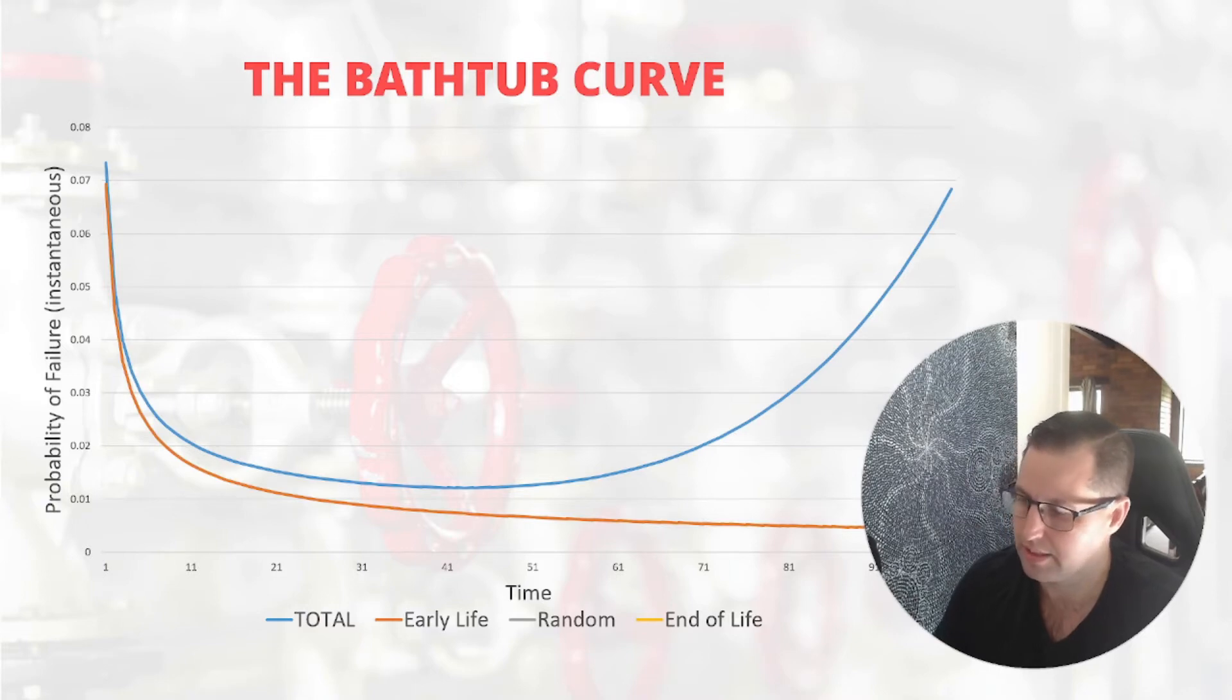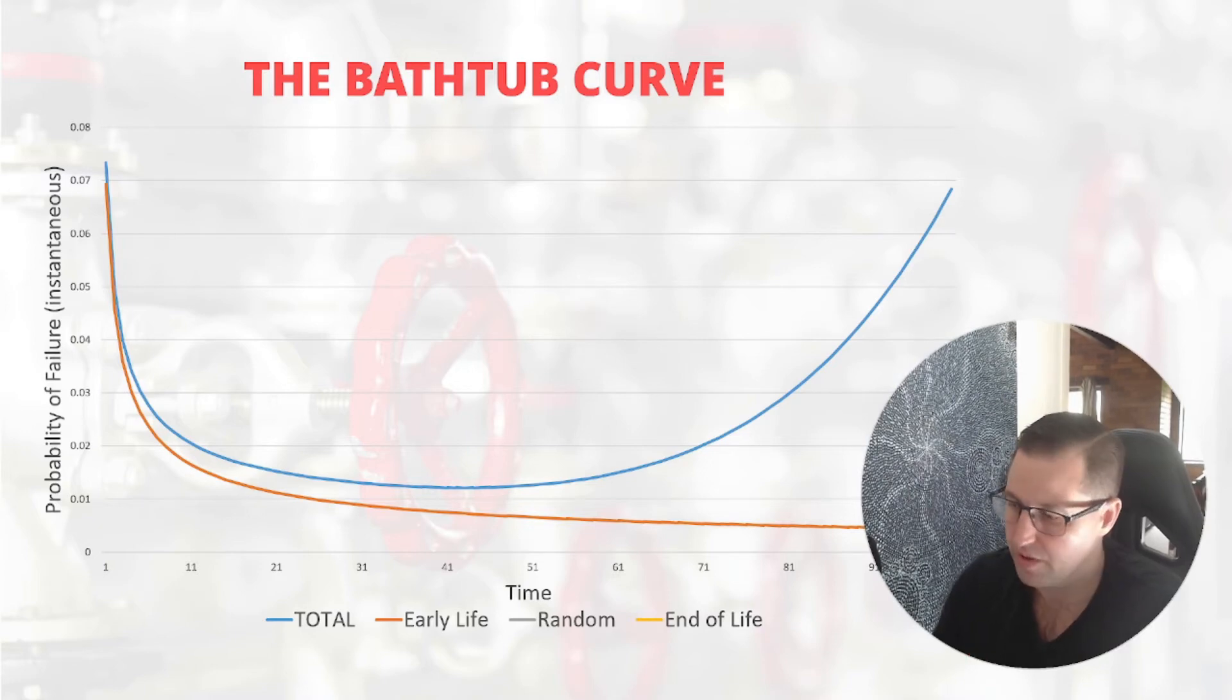The first one is the early life one described by the curve here in orange. For these, we're using like Weibull distribution curves, but other curves fit this kind of profile as well.